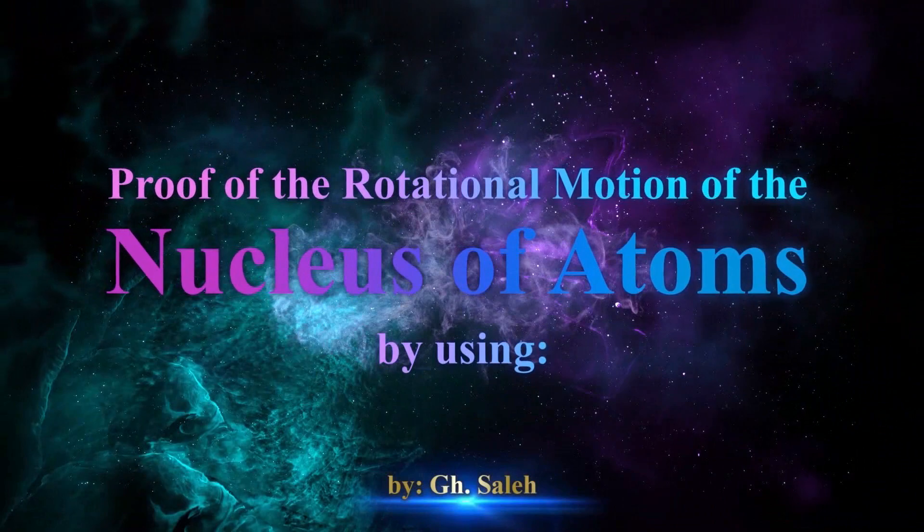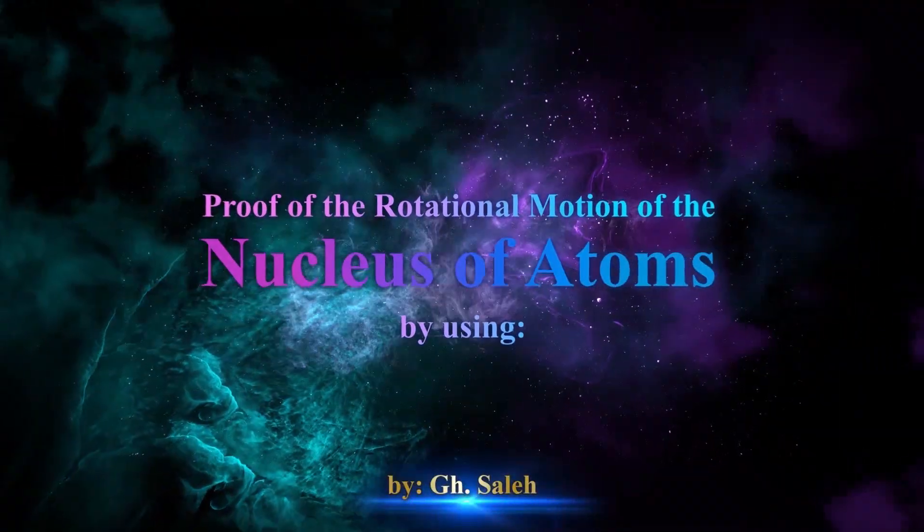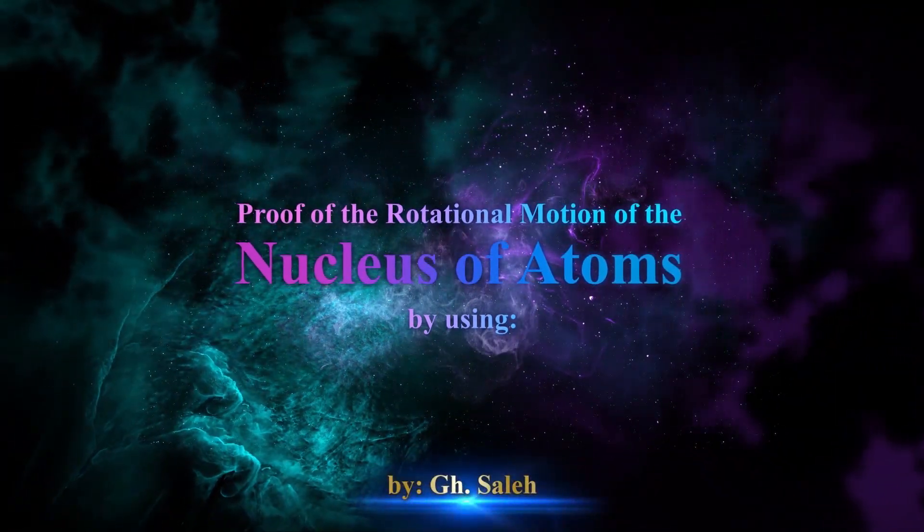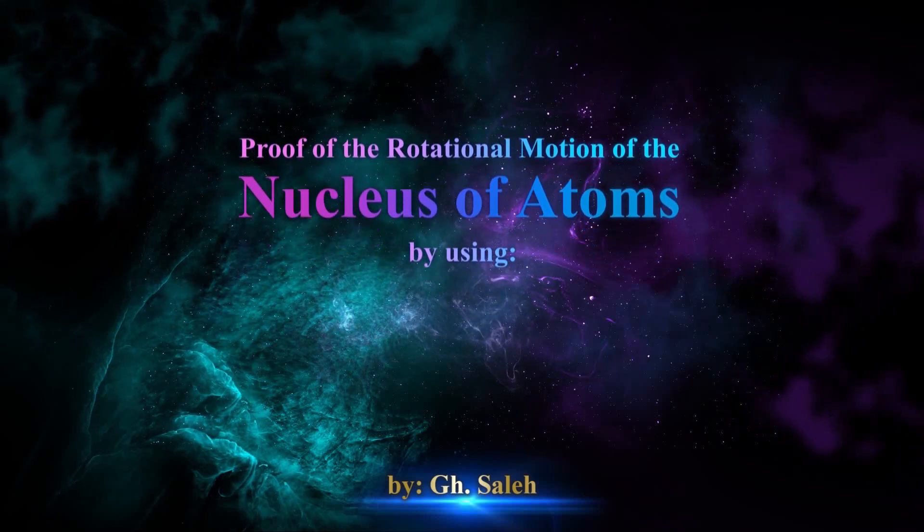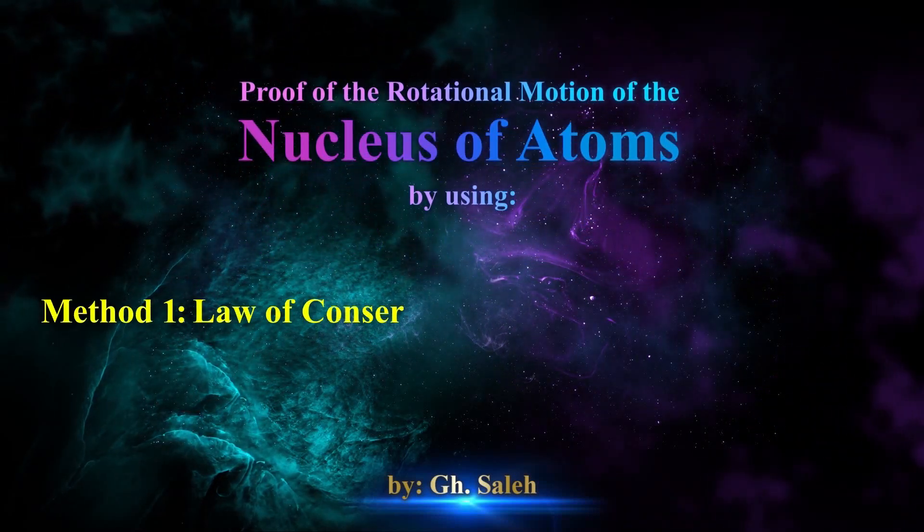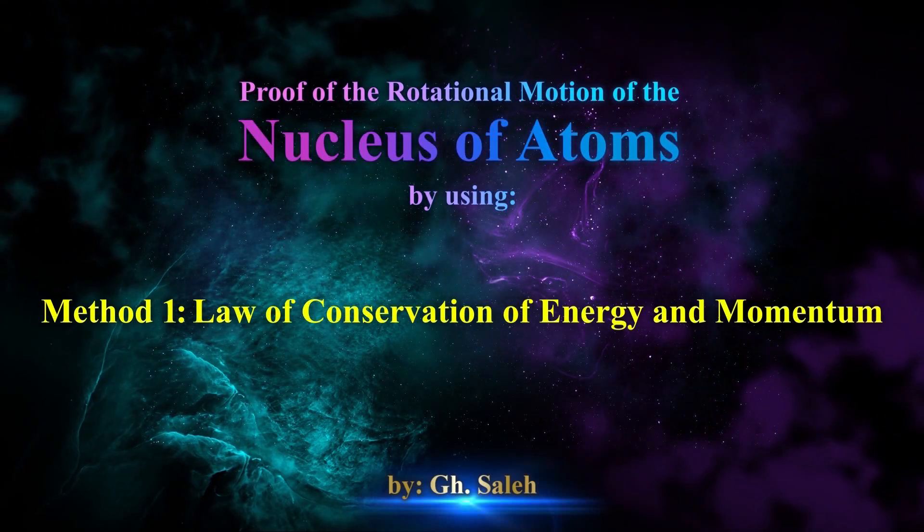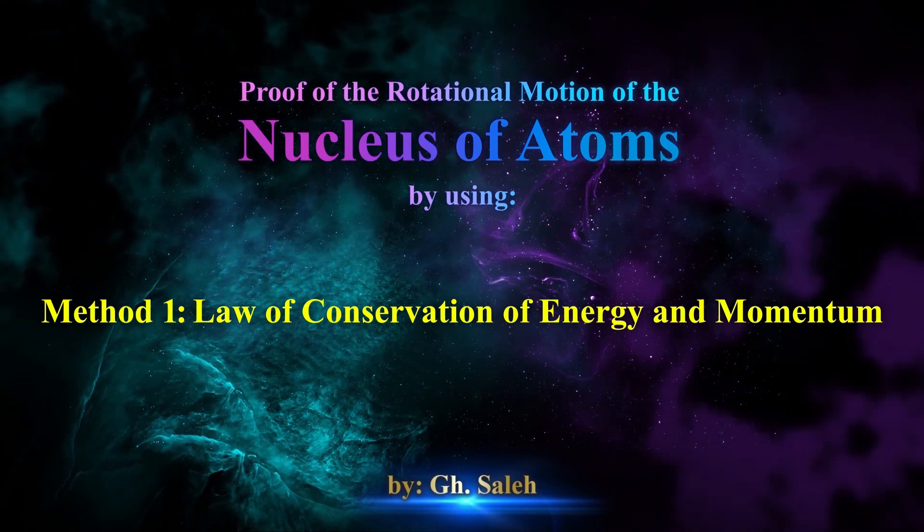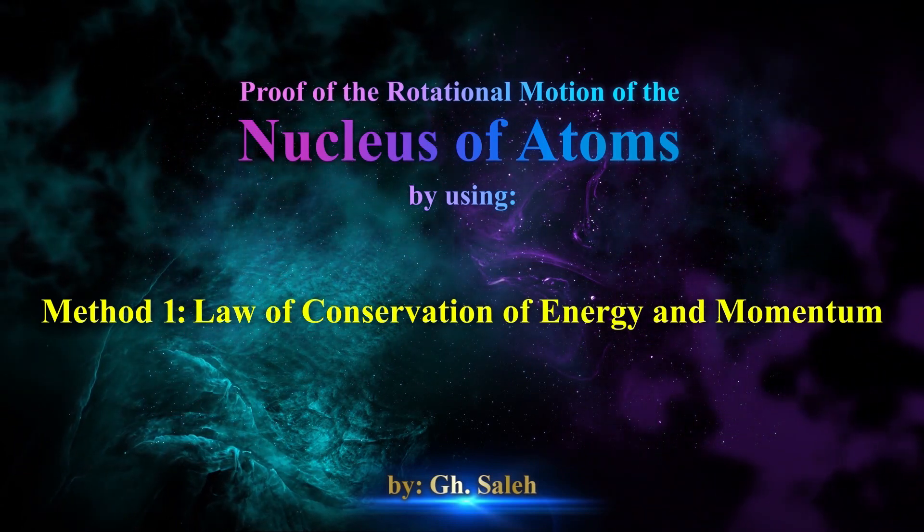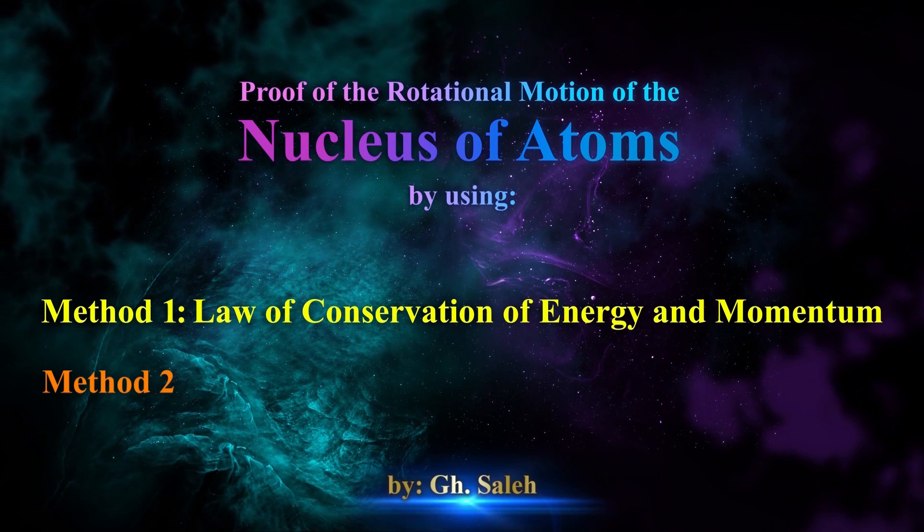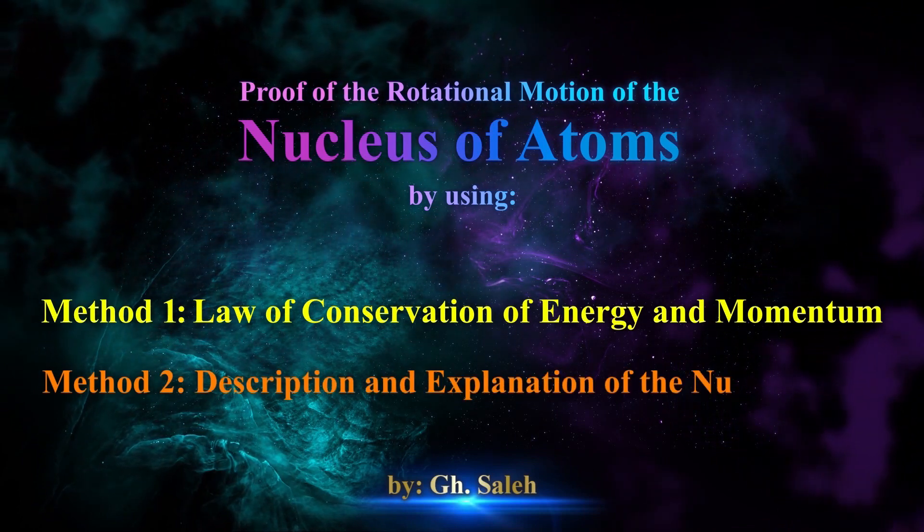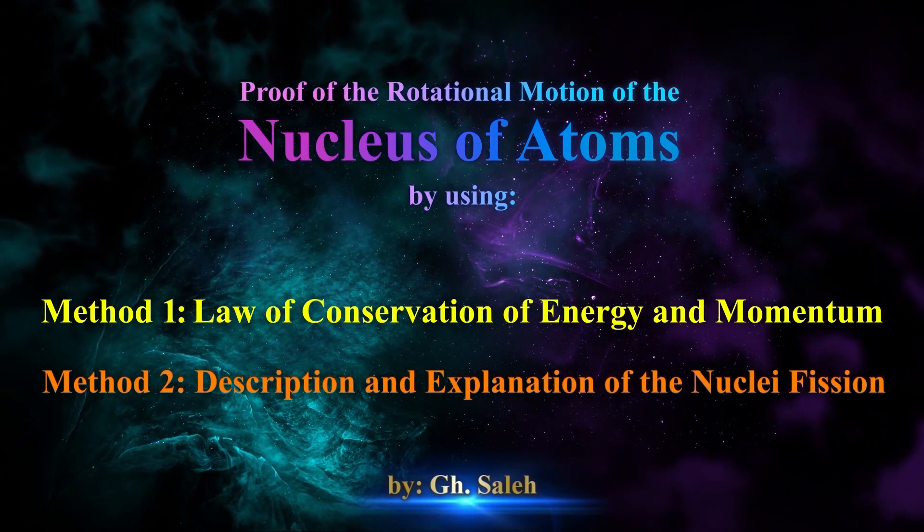Proof of the rotational motion of the nucleus of atoms using Method 1: Law of Conservation of Energy and Momentum, and Method 2: Description and Explanation of Nuclear Fission.